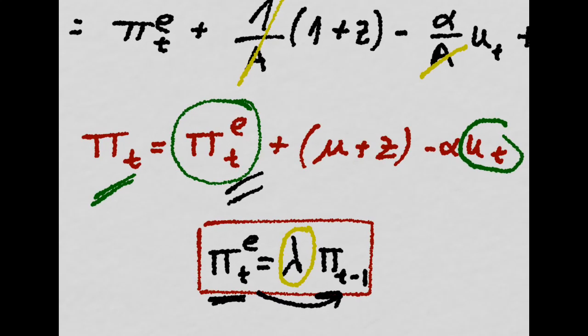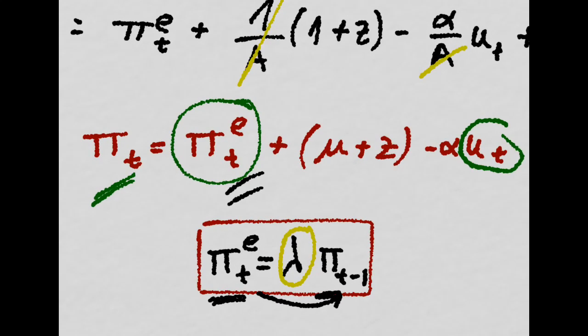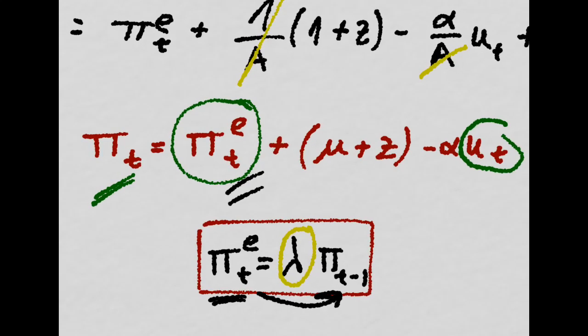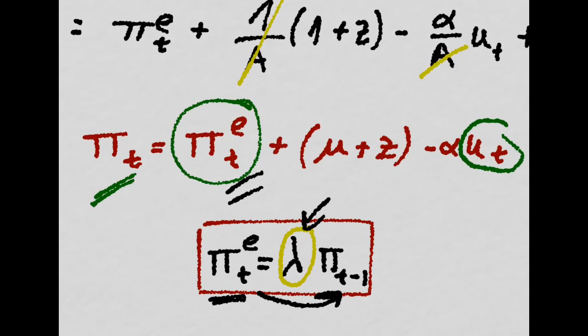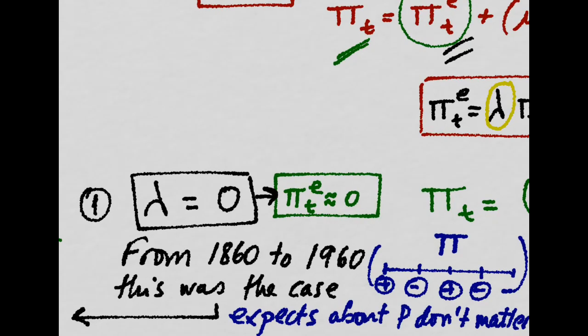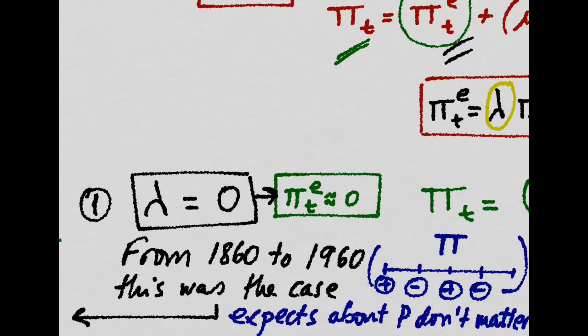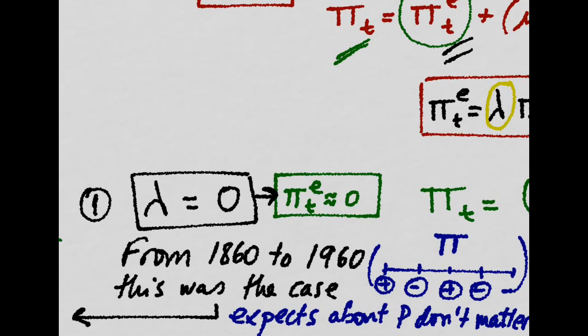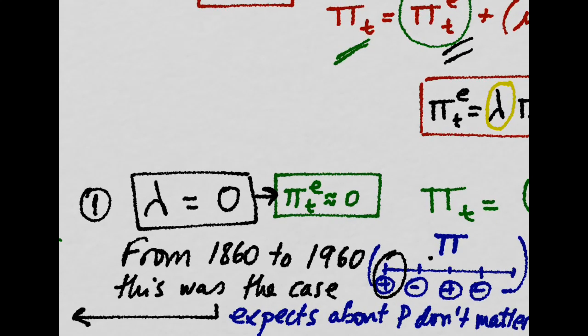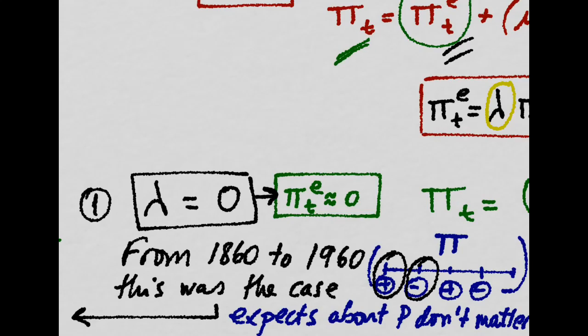How much they care about their recent experience with respect to inflation is given by this lambda. Before the 1960s, expectations about prices did not really matter. One year, the prices will increase, the next, they will decrease, and so on.